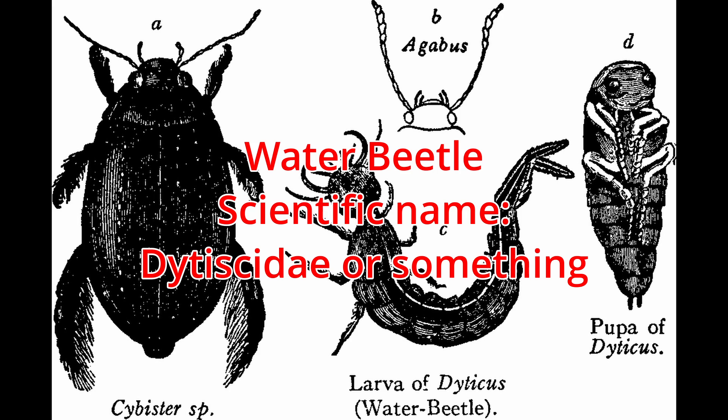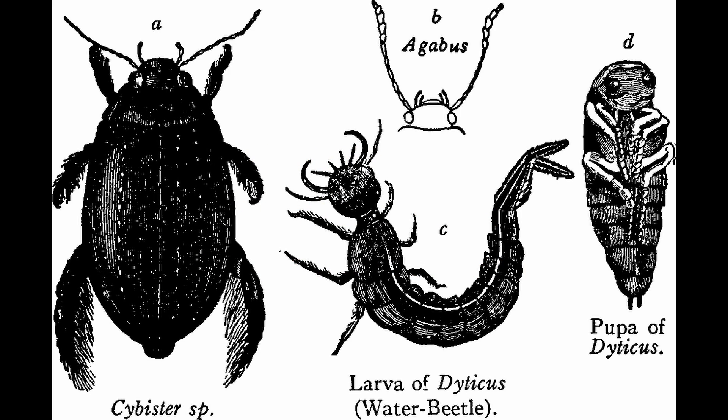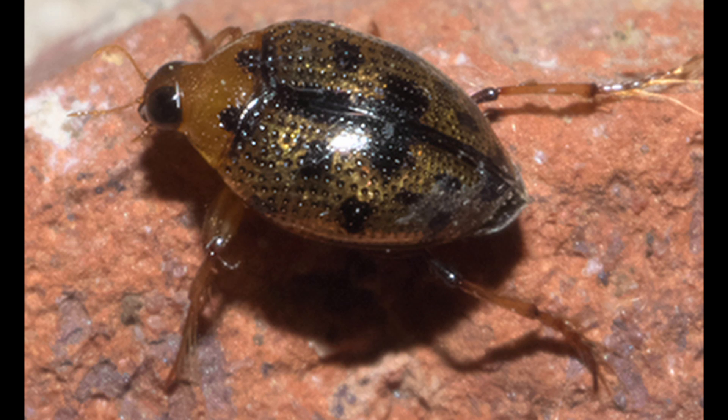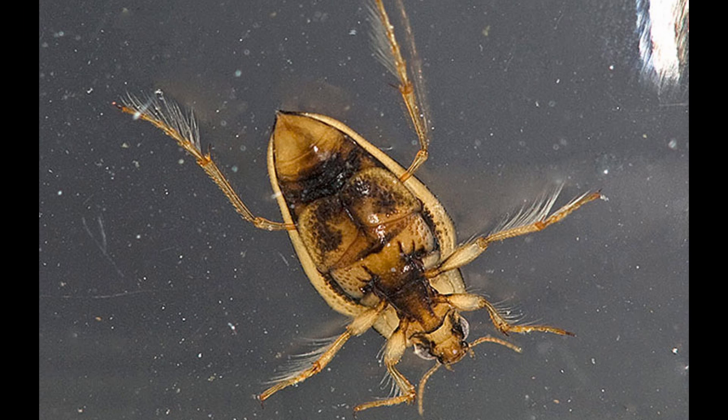Water beetle. Scientific name something like Dytiscidae. A water beetle is a generalized name for any beetle that is adapted to living in water at any point in its life cycle. Most water beetles can only live in freshwater, but there are a few marine species. Water beetles can be herbivores, predators, or scavengers. The herbivorous beetles eat only aquatic vegetation such as algae or leaves, and might also suck juices out of the stem of a plant nearby.